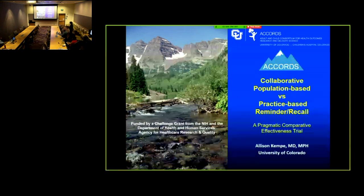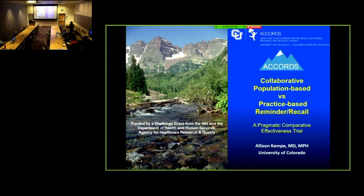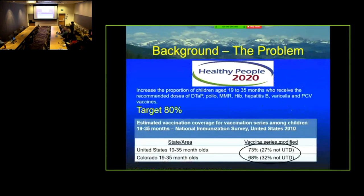Now I'm going to present a pragmatic trial I did — I've done about six in this area — and then we're going to analyze together how pragmatic or explanatory it was. This is a comparison of a population-based versus a practice-based reminder recall effort. The problem: we were trying to increase the proportion of children 19 to 35 months who were completely up-to-date according to recommended vaccines. Healthy People 2020 target was 80%, and we were at about 73% in the US and 68% in Colorado.